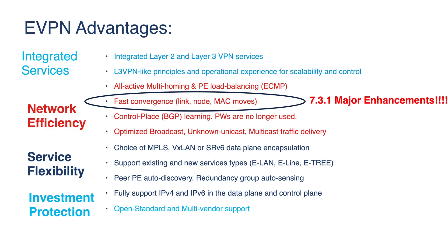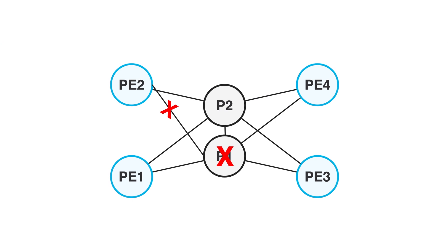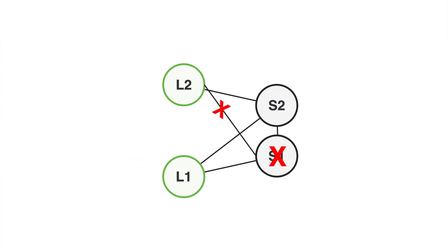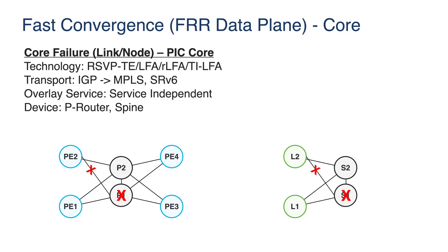Let's move to the next topic: convergence, a very important part of 7.3.1. First, a quick recap of how we solve convergence today. There are failures in the core, such as a node or link going down. When talking about the MPLS data plane — typically a P-router or spine — this is service agnostic. When using MPLS with segment routing, TI-LFA provides fast convergence. Another EVPN-specific mechanism is MAC mobility, which uses sequence numbers when advertising MAC addresses.